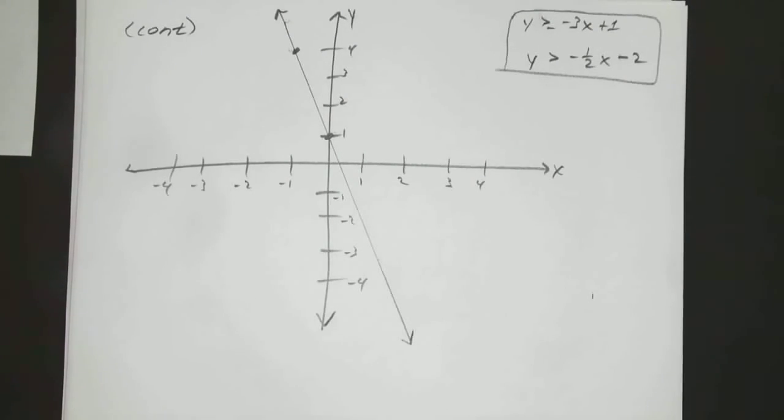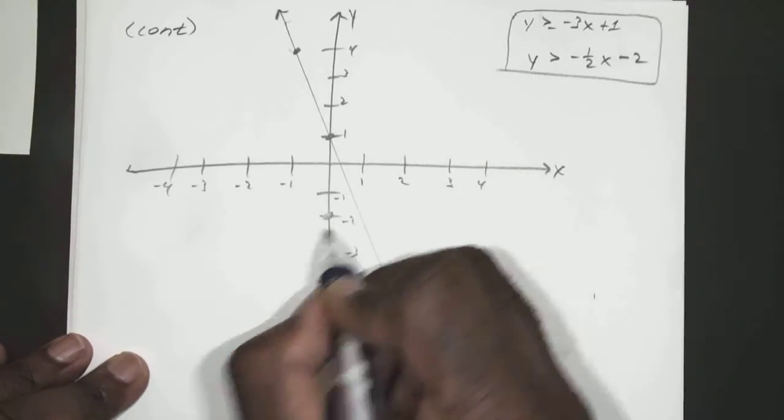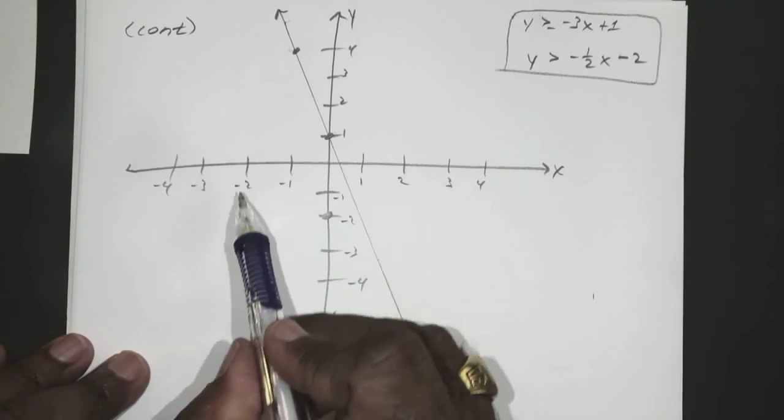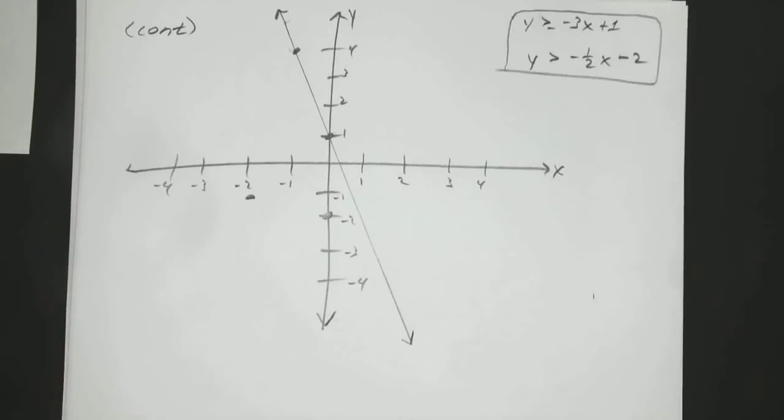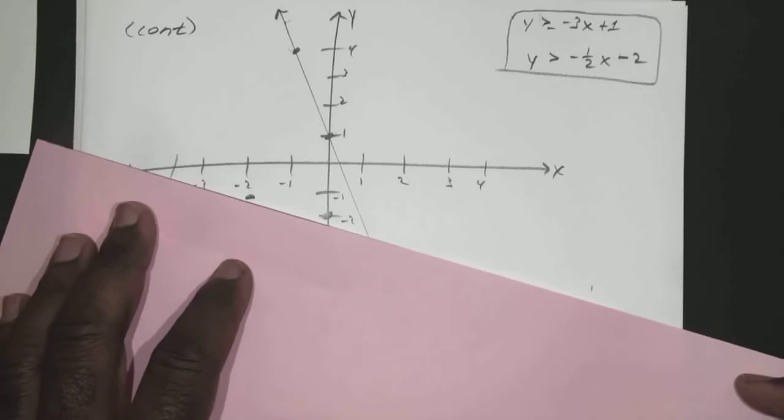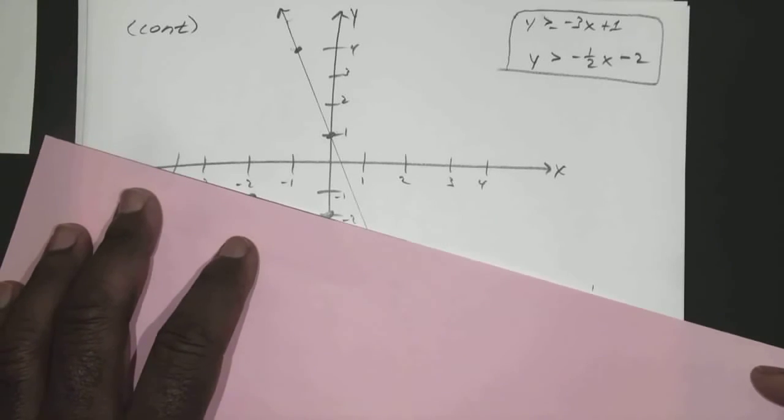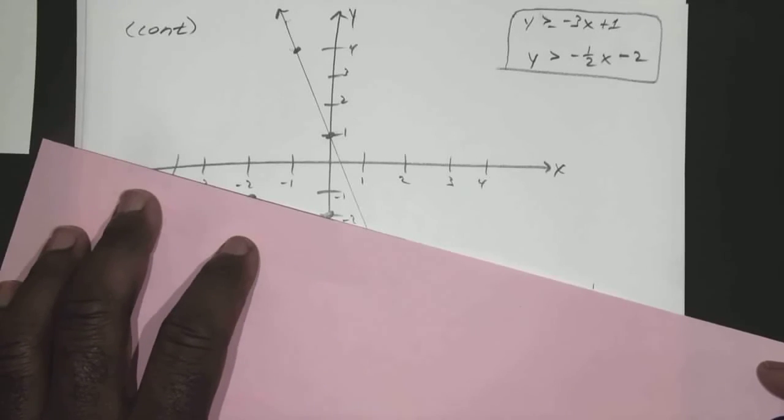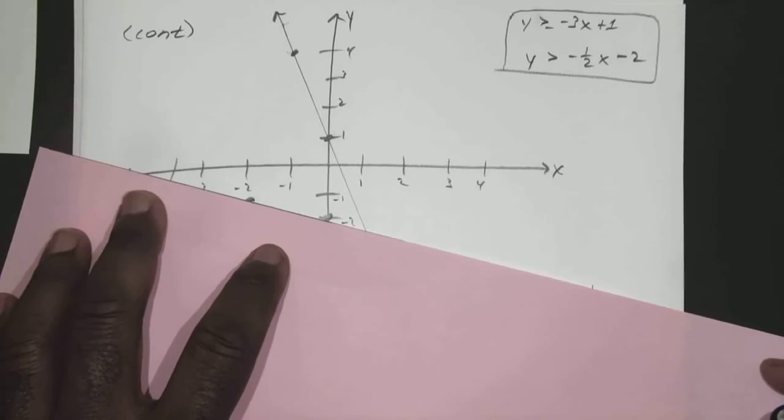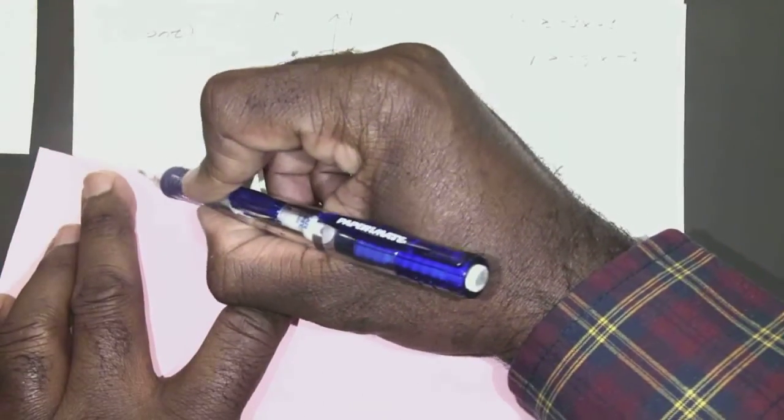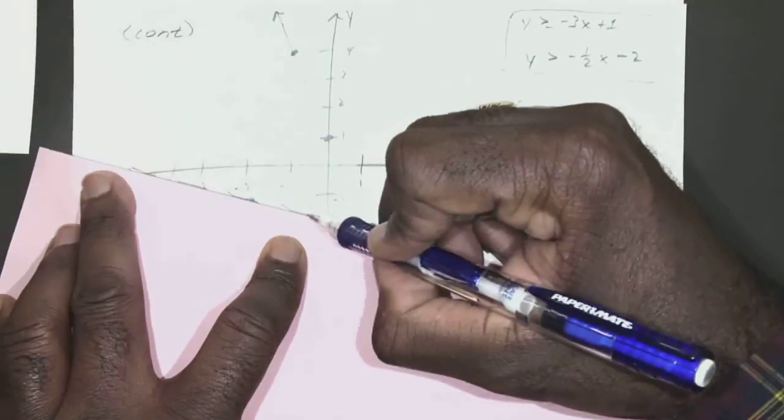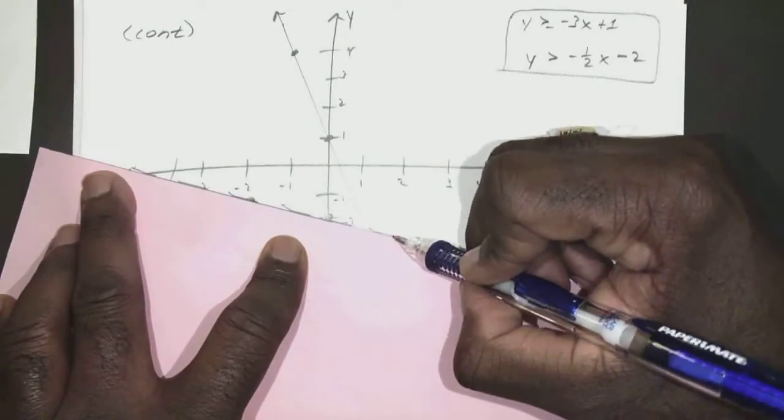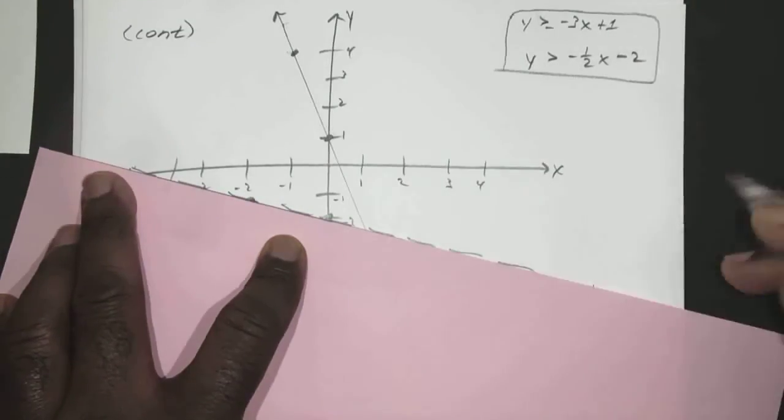All right. And for negative 1 half x minus 2, we have 0, negative 2, which is right there, and we have negative 2, negative 1. So, negative 2, negative 1, it's about right there. So, that one lines up to about here. Okay. And that one's dotted, so I actually remembered before I started graphing.